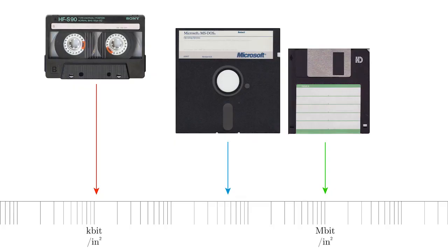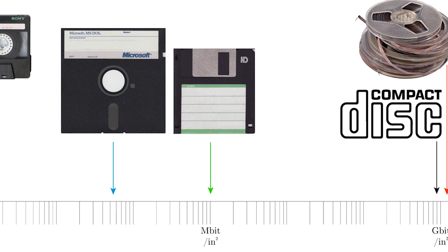A while back I did a video on how we store data or information on various types of media. But how do we actually transmit that information from one place to another? The answer is we use waves, usually electromagnetic waves, and in fact we use almost the entire electromagnetic spectrum.